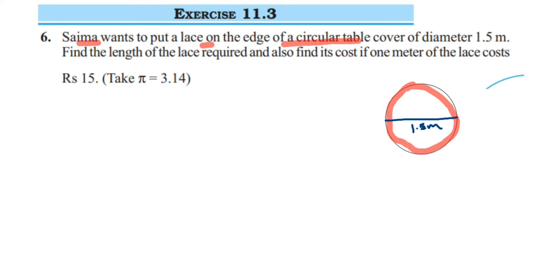We have to find out the length of the lace. Since she is applying a lace on the boundary, boundary is nothing but the circumference, so we have to find out the circumference of circle. That is nothing but that much lace she wants to put along the edge of the circular table. And after that we have to also find the cost.